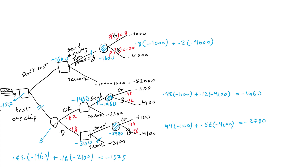The minimum expected cost is $1,575 per batch processed, following this decision: first, test one chip. If it's okay, send it directly for production. If it's defective, rework it first. We used Bayes' theorem to get the posterior probabilities, and the rest followed standard decision tree analysis.